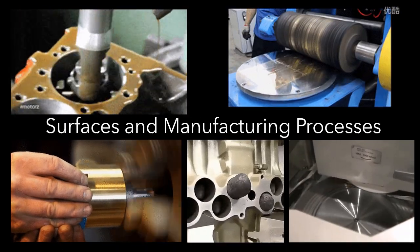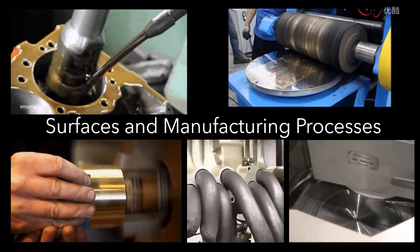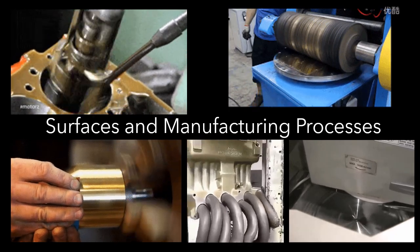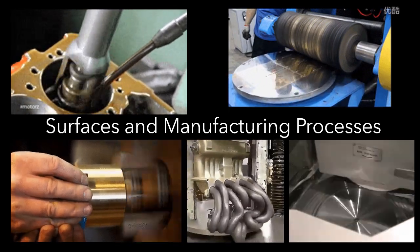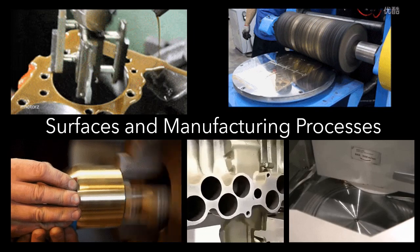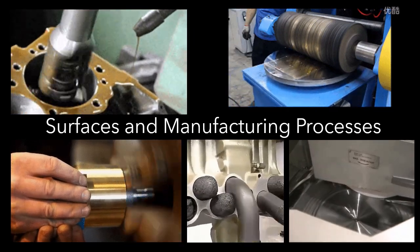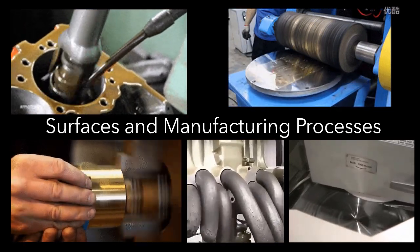Surface quality is directly related to the manufacturing process. Some processes are inherently capable of producing better surfaces than others. In general, to obtain better surfaces, the processing cost increases.